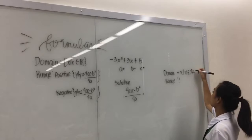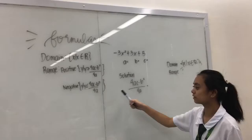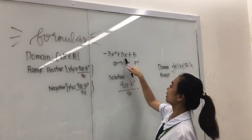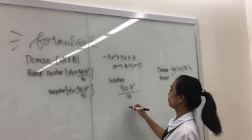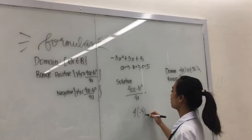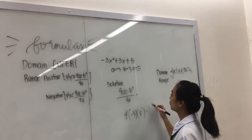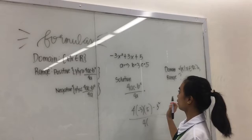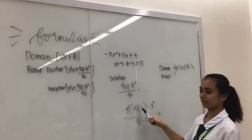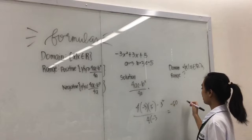For the range, we will be using the two formulas. For this given, we will be using the negative formula, which is y such that y is less than or equal to 4ac minus b squared, all over 4a. A is negative 3, b is equal to 3, c is equal to 5. So 4 multiplied by negative 3, multiplied by 5, minus 3 squared, all over 4 multiplied by negative 3. So 4 times negative 3 times 5 is equal to negative 60, minus 9, all over negative 12.